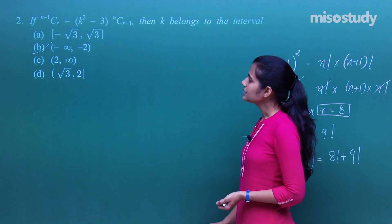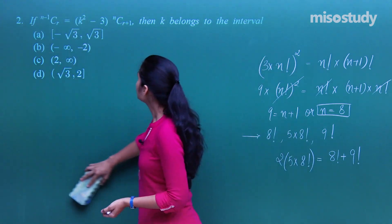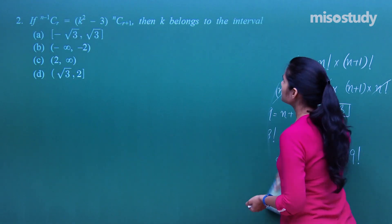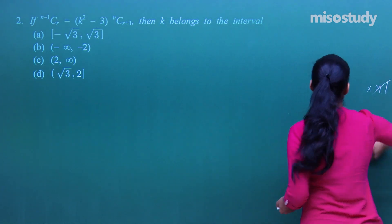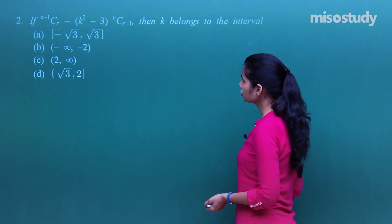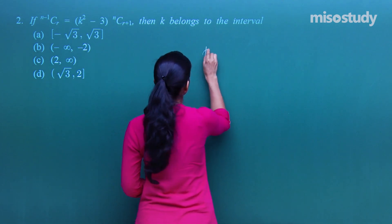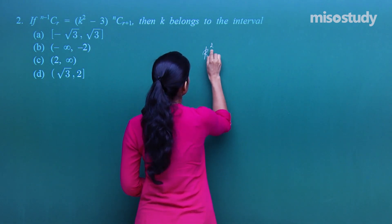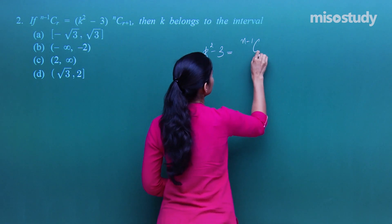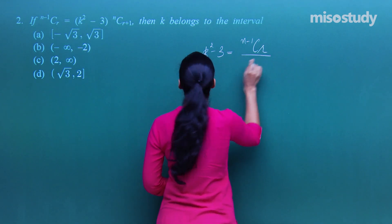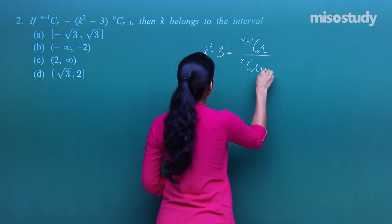The next question says: if ⁽ⁿ⁻¹⁾Cᵣ = (k²−3)·ⁿCᵣ₊₁, then to which interval does k belong? We rearrange to get k²−3 = ⁽ⁿ⁻¹⁾Cᵣ / ⁿCᵣ₊₁.